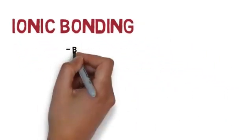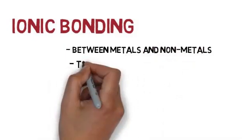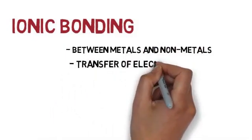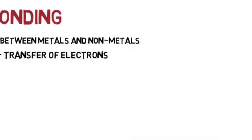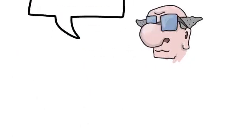In the last chapter we discussed that ionic bonding happens typically between metals and non-metals and by a transfer of electrons from the metal to the non-metal. The way I like to describe it is to use an example. So let's look at sodium chloride.